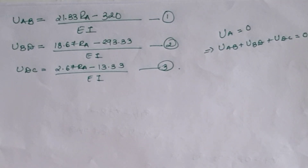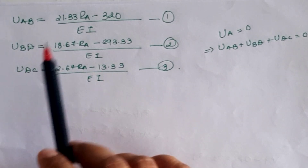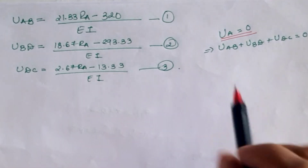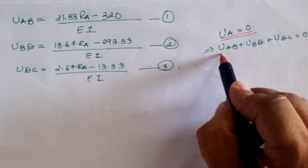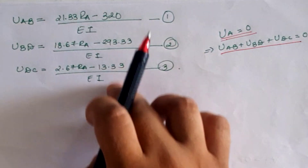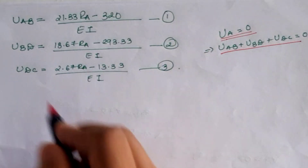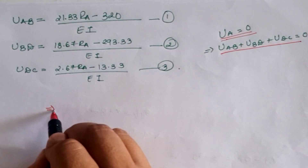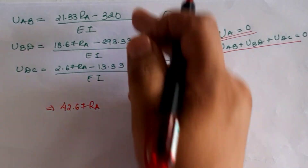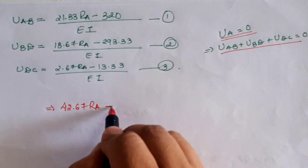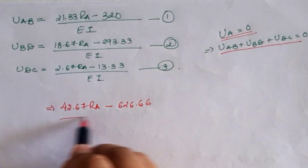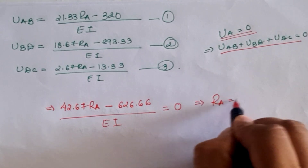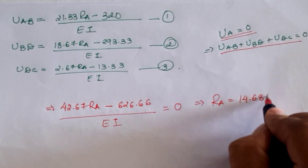From the above calculations we have strain energy in segments A-B, B-D, and C-D. Since the total deflection at A is zero, summing all three strain energy expressions and setting equal to zero: the total Ra coefficient is 21.33 + 18.67 + 2.67 = 42.67, and the total constant is 320 + 293.33 + 13.33 = 626.66. So 42.67·Ra − 626.66 = 0, giving the redundant reaction Ra = 14.68 kN.